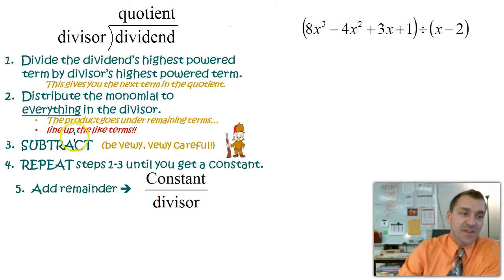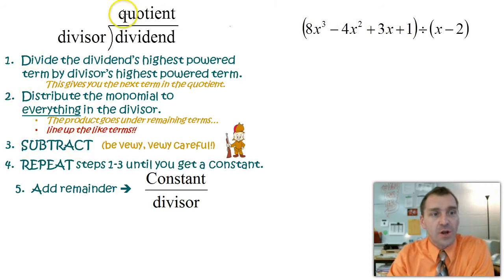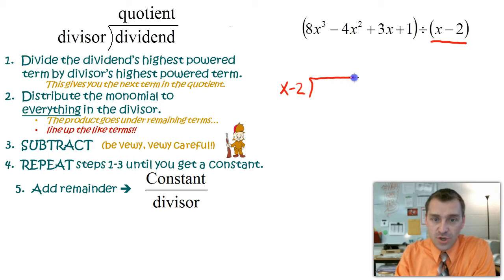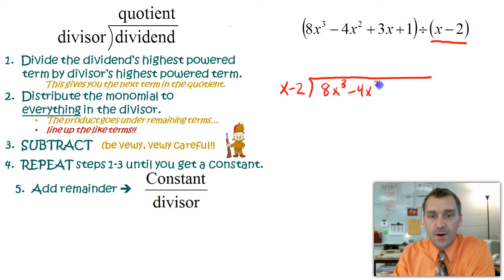And let's set this thing up using our steps over here. We're going to go quotient, divisor, dividend. So this thing here, remember, the x minus 2, that is what I'm dividing into this entire polynomial. So this is my divisor. So I put it over here, x minus 2. My division house, right there. And then the dividend is all this stuff, so it is 8x cubed minus 4x squared plus 3x plus 1.